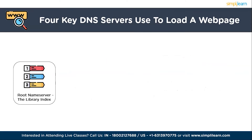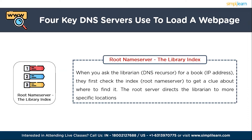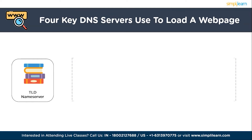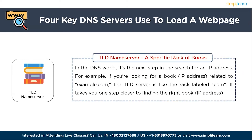The root name server is like the index in a library — it doesn't have all the books, but it knows where to look. When you ask the DNS recursor for an IP address, it first checks the root name server for a clue about where to find it, and the root server directs the librarian to more specific locations. The TLD name server is like a specific rack of books — dedicated to a particular category. For example, if you're looking for an IP address related to example.com, the TLD server is like the rack labeled '.com,' taking you one step closer to the right answer.